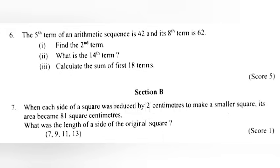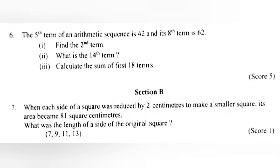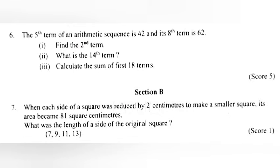Part 2: What is the 14th term? Answer: x₁₄ = x₈ + 6d = 62 + 2 × 20 = 102. Part 3: Calculate the sum of first 18 terms. Sum = 9 × (x₅ + x₁₄) = 9 × (42 + 102) = 1296.